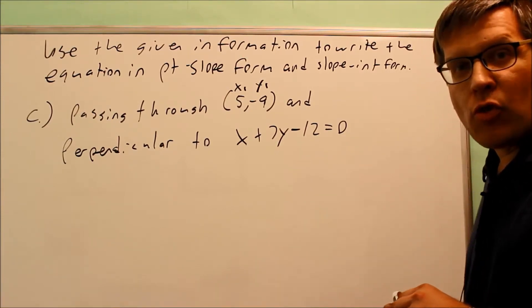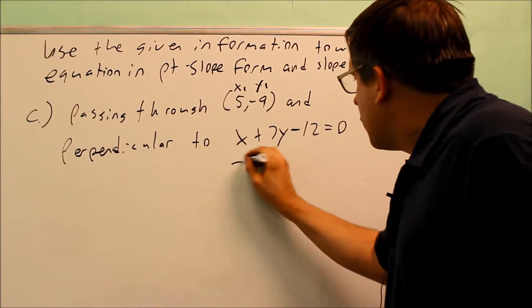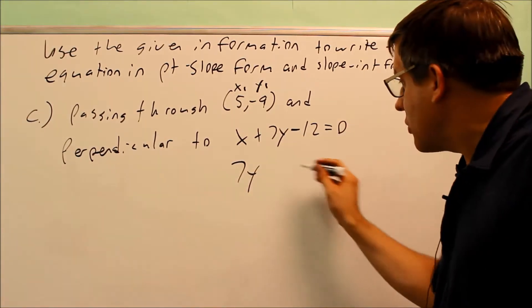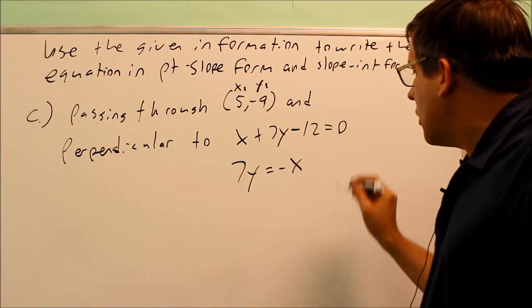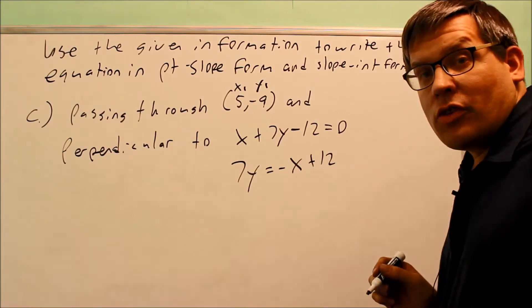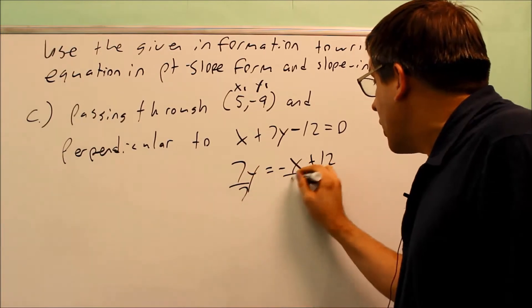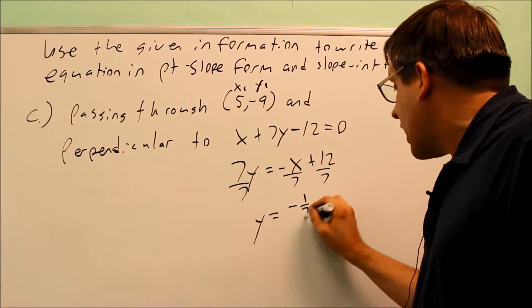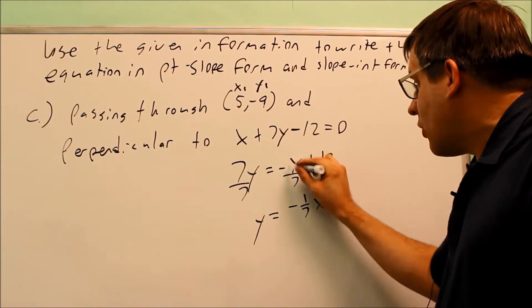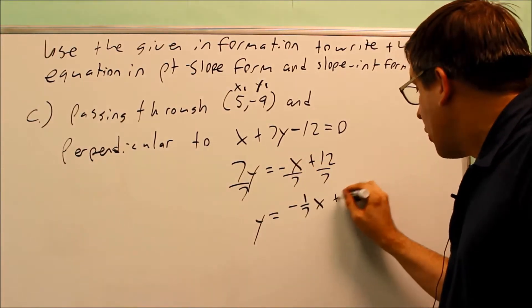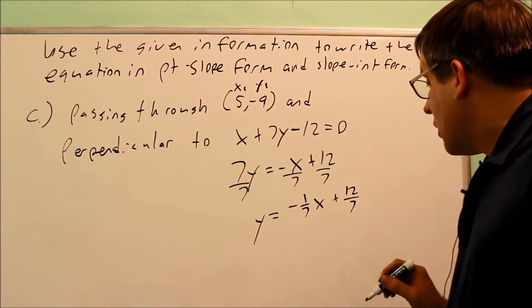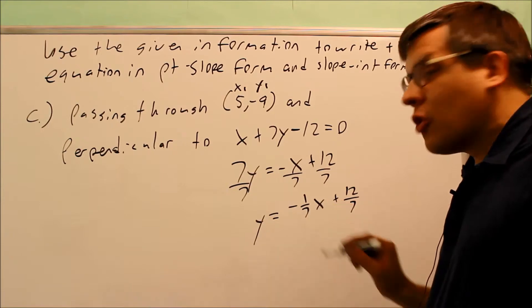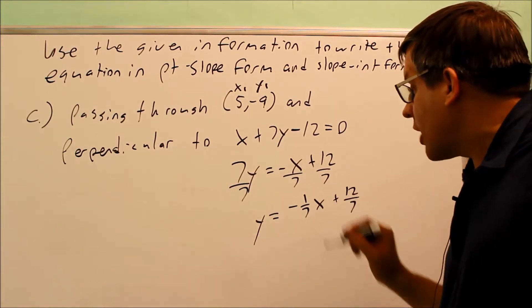To solve for y, I move the x and the 12 across the equal sign — both change signs — giving 7y equals negative x plus 12. Dividing everything by 7, I get y equals negative one-seventh x plus 12 over 7. I only care about the slope, which is negative one-seventh. That is the slope of the original line.